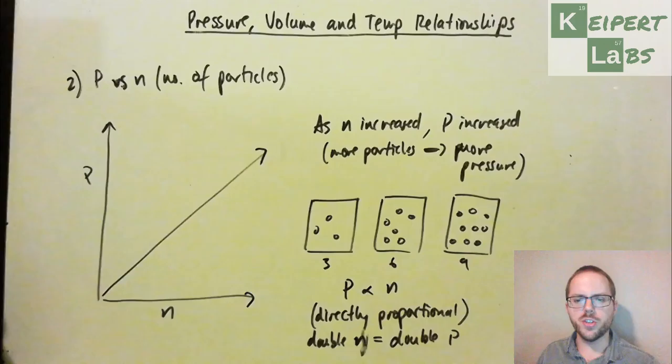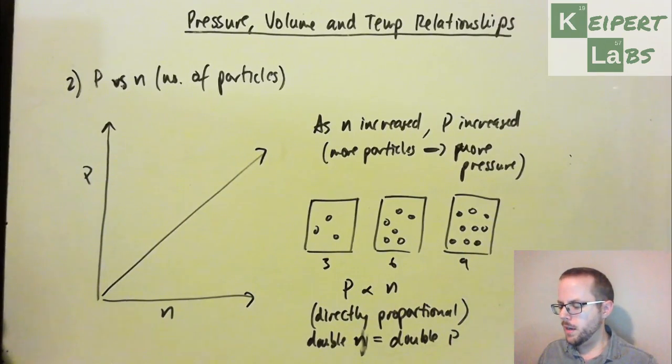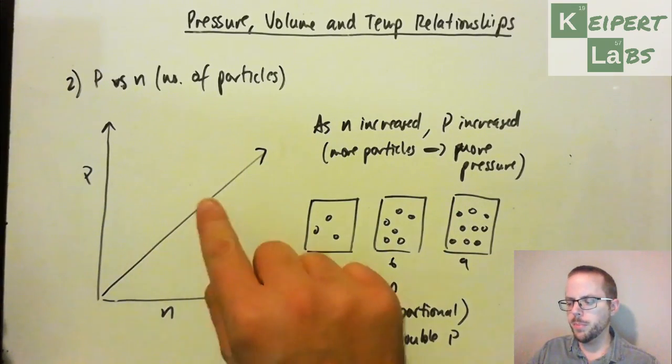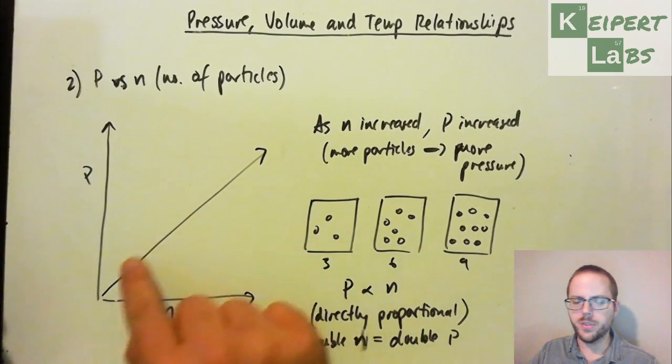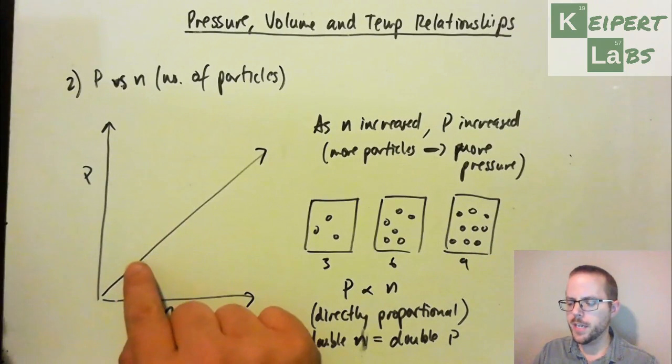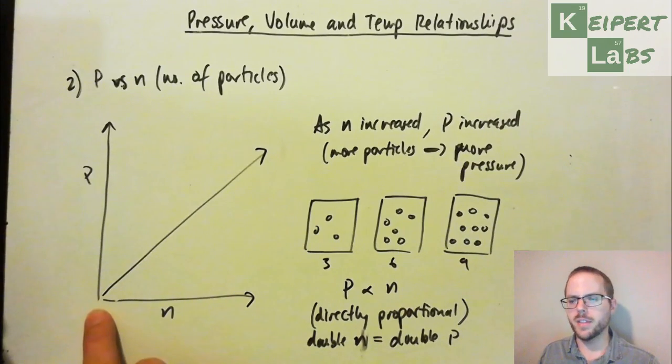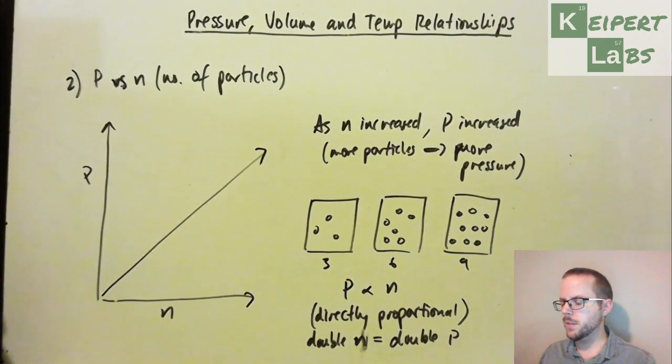So it's a direct relationship. If you triple the number of particles, you triple the pressure. If you halve the number of particles, you halve the pressure. Eventually, if you get to a point in which you have zero particles, you should also have zero pressure, because there's no collisions between the particles and the container.